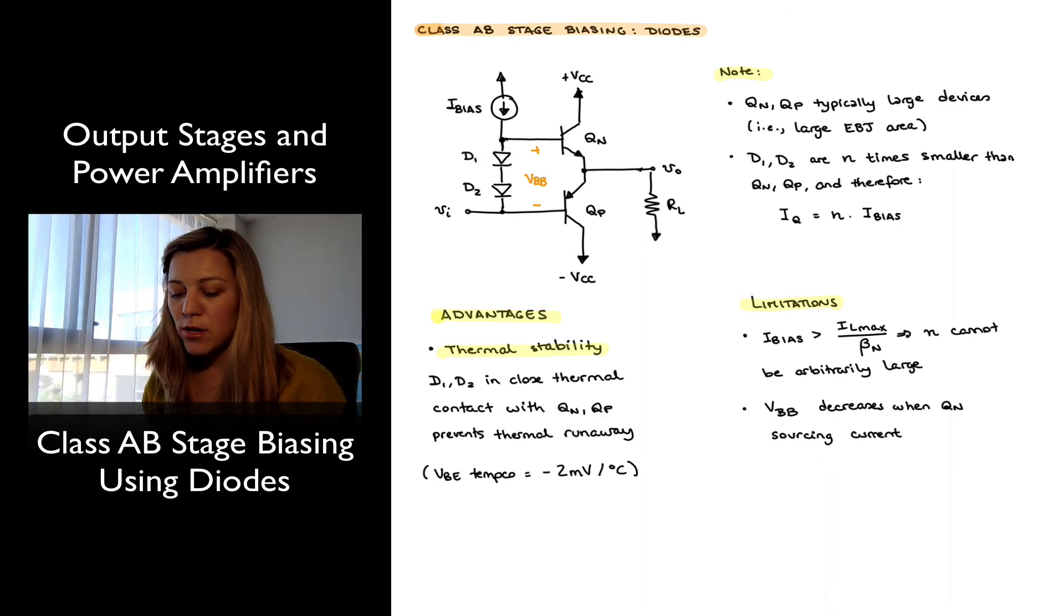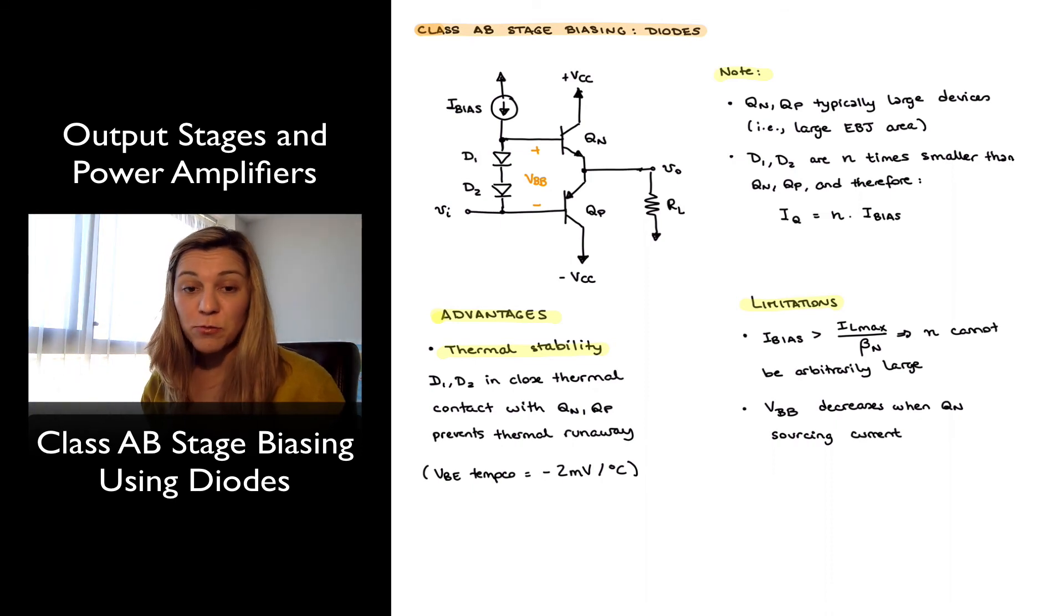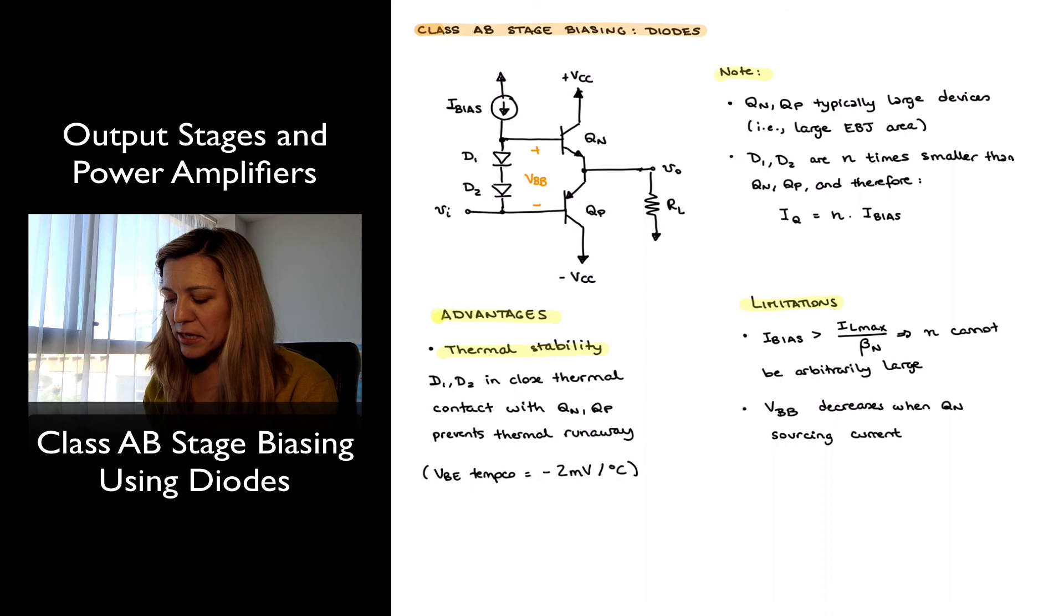And what that means is that there is a minimum amount of bias current that we need to have available, and therefore D1 and D2 cannot be made arbitrarily small, or arbitrarily smaller than the output transistors. There's a limit to that.